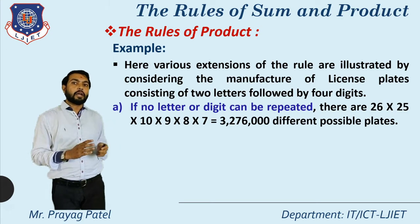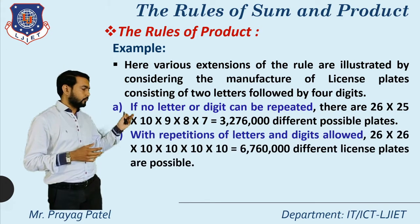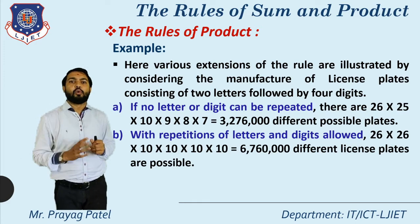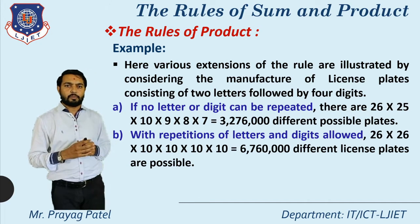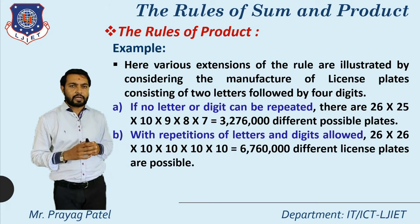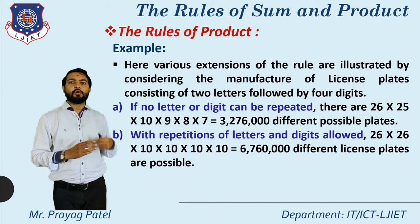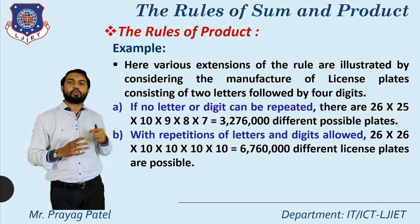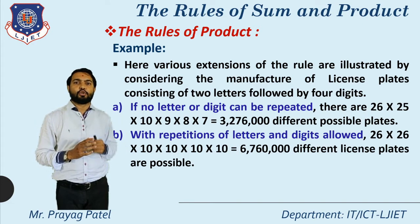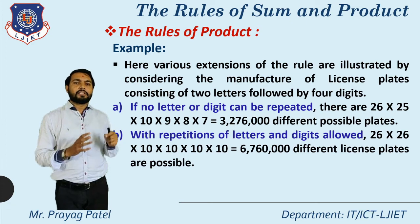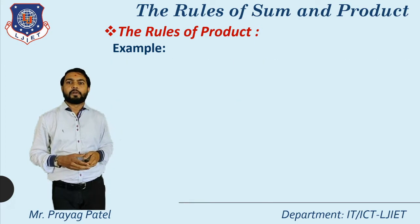For the second scenario, with repetition of letters or digits allowed: for the first character there are 26 possibilities and for the second character also 26 possibilities, so 26 × 26. For the digits, repetition is also allowed, so 10 × 10 × 10 × 10. The final answer is 26 × 26 × 10 × 10 × 10 × 10 = 6,760,000 different ways possible when repetition of characters is allowed.